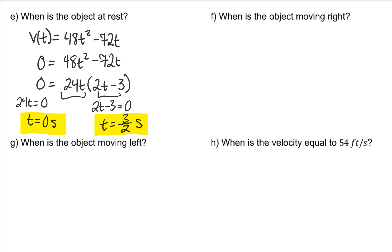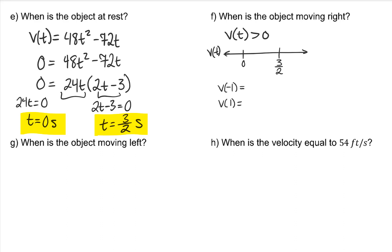When is the object moving right? Rightward movement indicates a positive velocity, so when is the velocity function greater than 0? We already solved the two t-values that make v of t equal to 0, so I'm going to put those on a number line and check the intervals for positive or negative velocity, testing v of negative 1, v of 1, and v of 2. Note: we will work with negative time if the problem hasn't specified t is greater than or equal to 0.